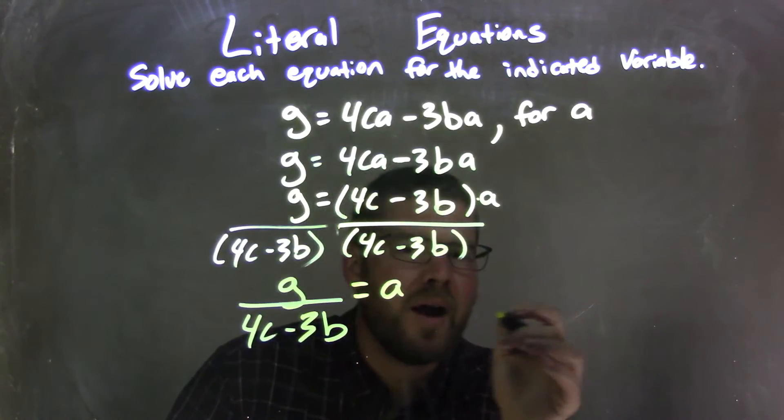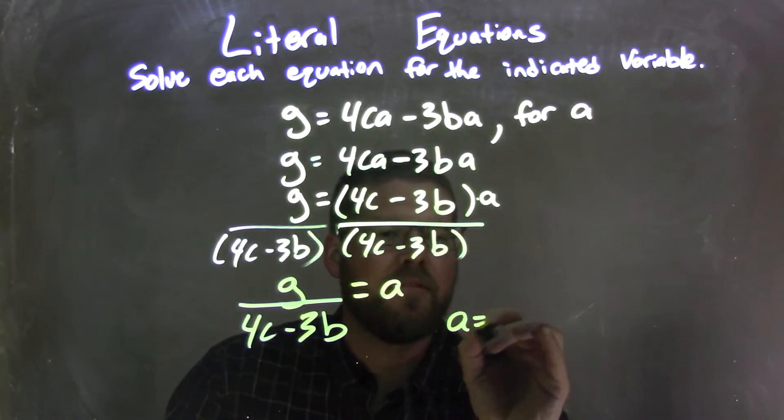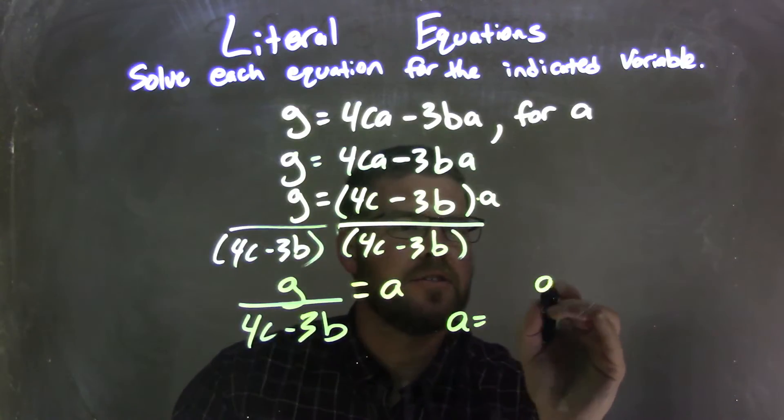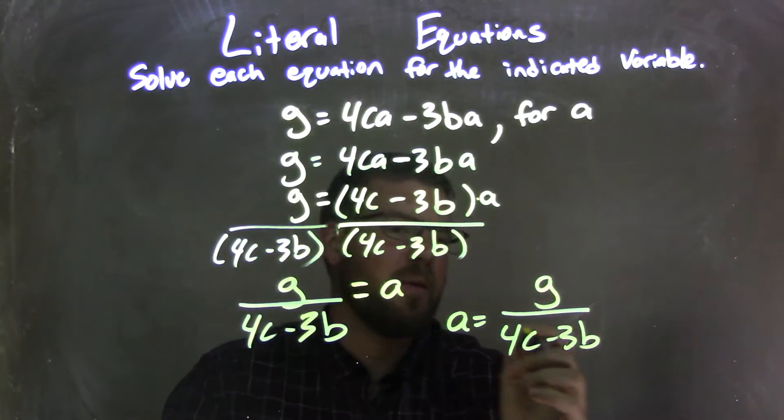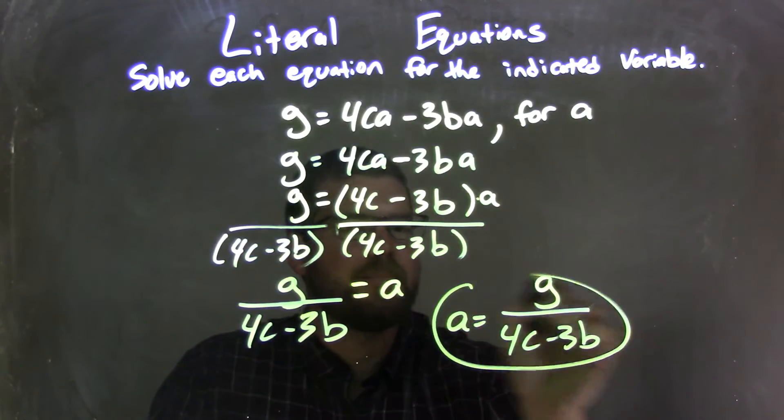All I'm going to do is rewrite this to make it nice and neat, and put A coming first, so I have A equals G over 4C minus 3B, and then we're good. We're good to go. That's it. That's our final answer.